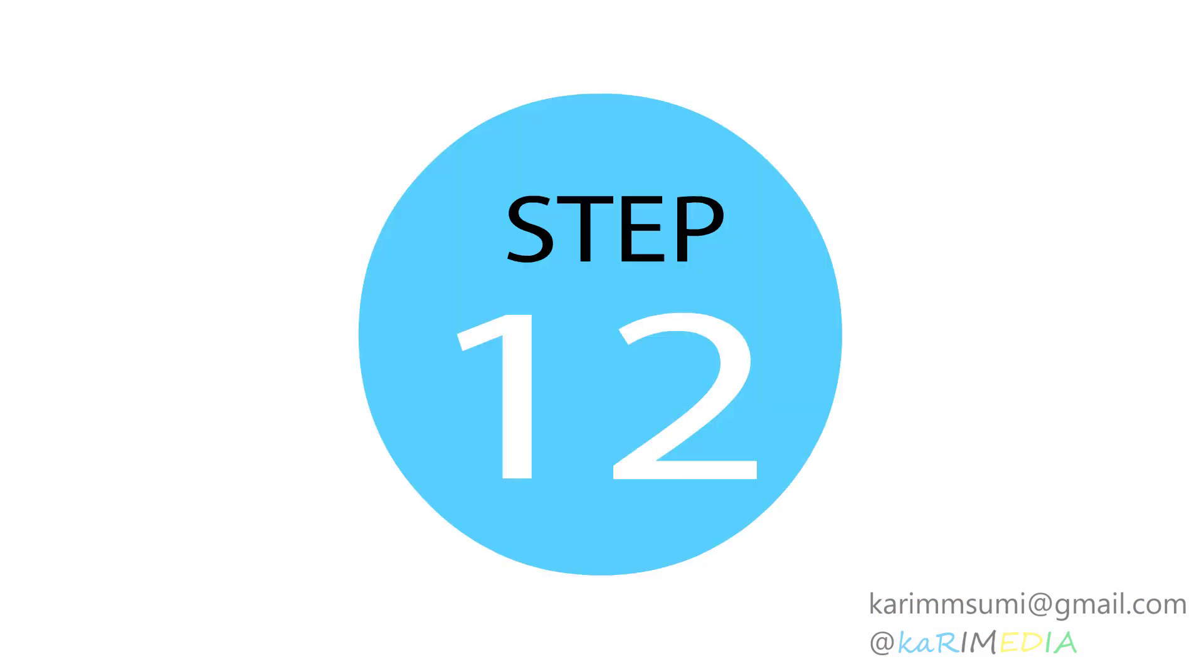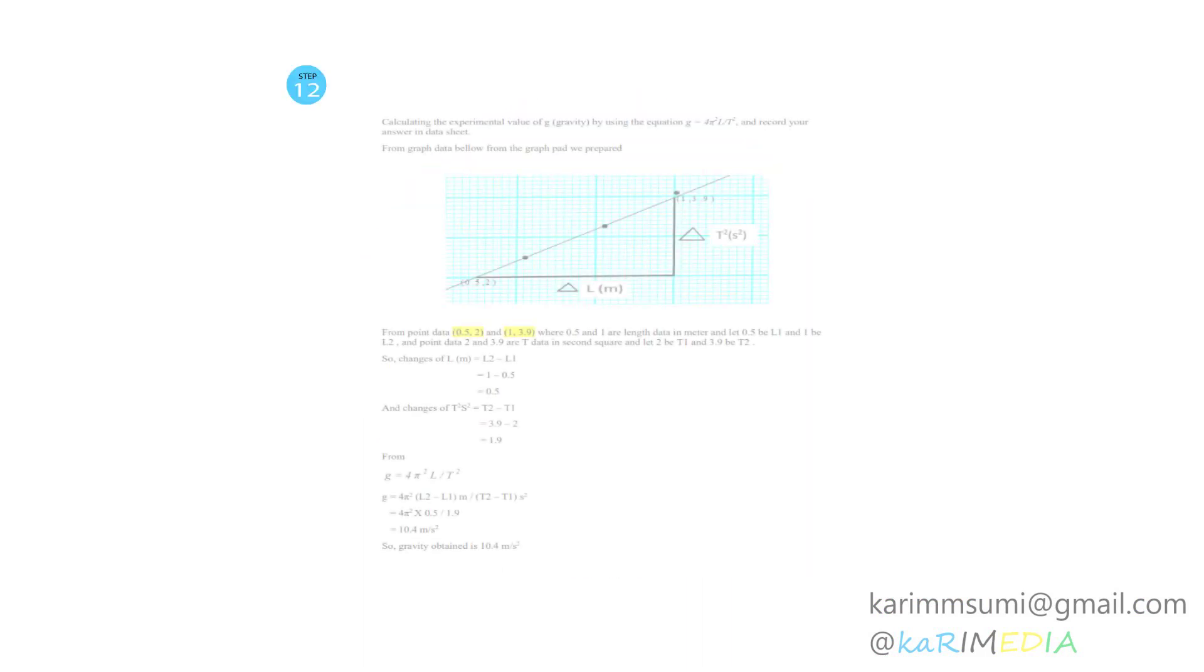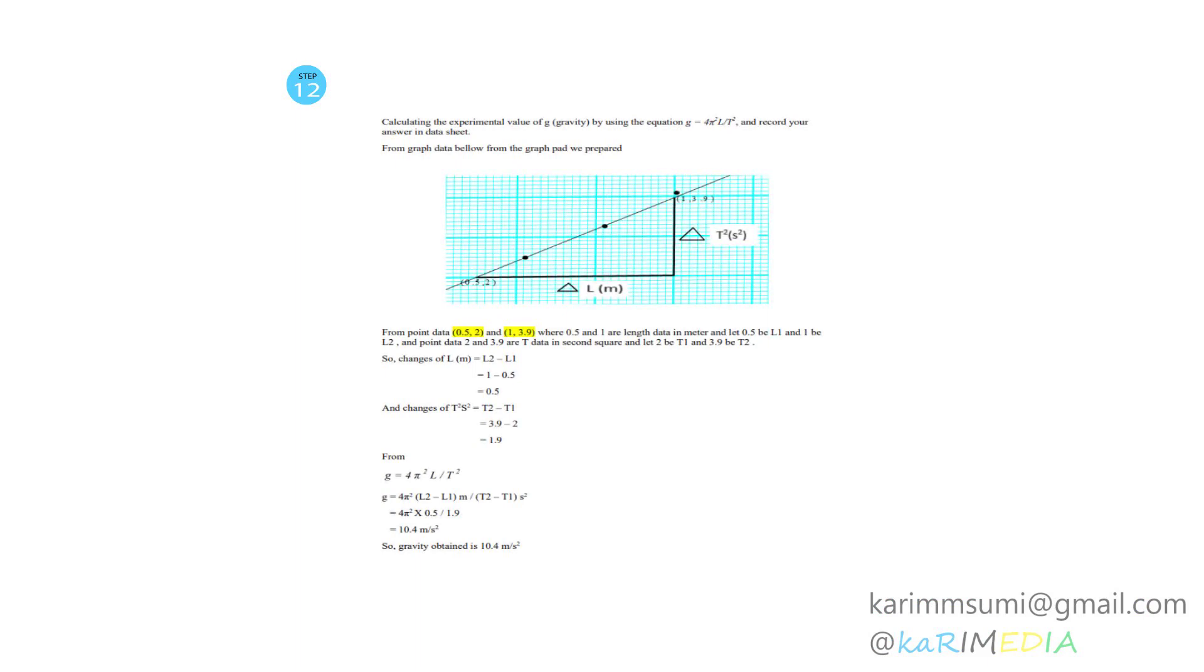Step 12: The slope of the straight line is calculated and the value is recorded in the datasheet. After that, the experimental value of g, the acceleration due to gravity, is calculated as shown. From the whole experiment, the acceleration due to gravity obtained is 10.24 meters per second squared.